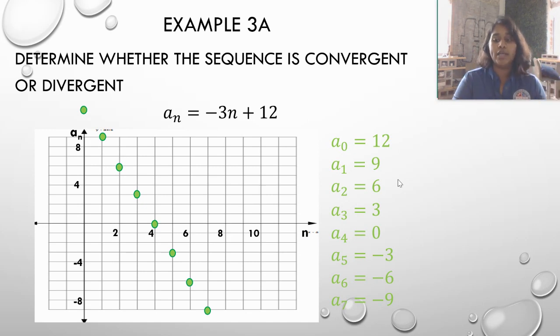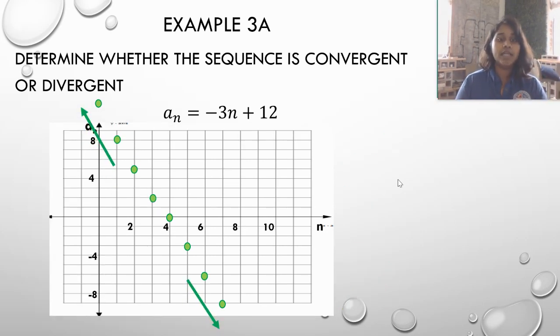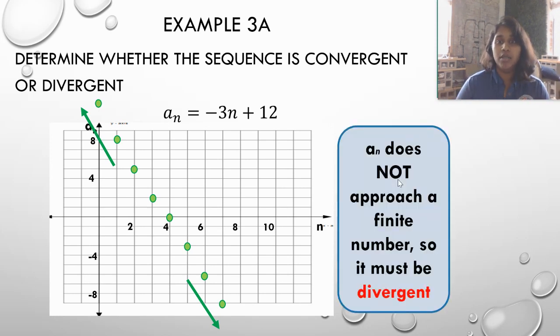Are they at any point moving to a single finite number? Well, the left end is going to positive infinity and the right end is going to negative infinity. So I'm going to say no. Our sequence does not approach a finite number, so it must be divergent. It did not approach a finite number.